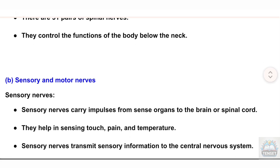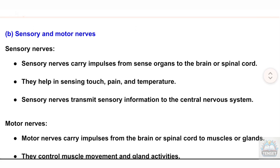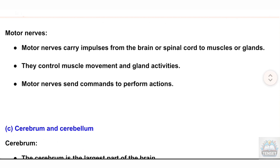(b) Sensory and motor nerves. Sensory nerves carry impulses from sense organs to the brain or spinal cord; they help in sensing touch, pain, and temperature, transmitting sensory information to the central nervous system. Motor nerves carry impulses from the brain or spinal cord to muscles or glands; they control muscle movement and gland activities, sending commands to perform actions.